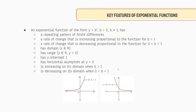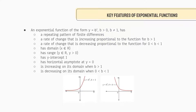First of all, we need to discuss the key features of an exponential function. Down below I have two graphs which we will discuss in a moment. An exponential function has the following form: y equals b to the power of x, where b has to be greater than zero and b cannot equal one. This form has the following features. First, it has a repeating pattern of finite differences. Unlike polynomial functions where we got to a point where the finite differences were the same, we're actually just going to be following a pattern.